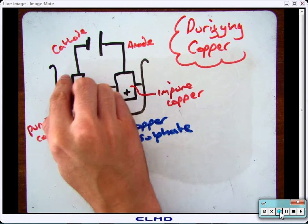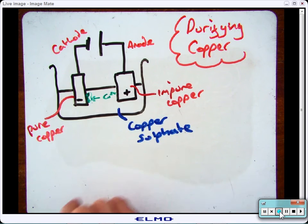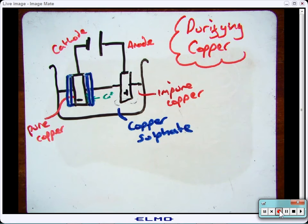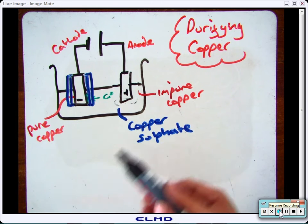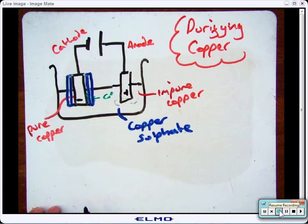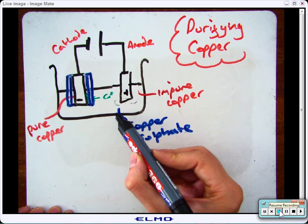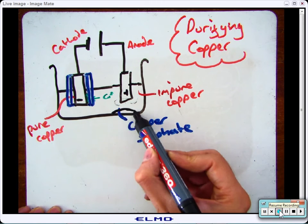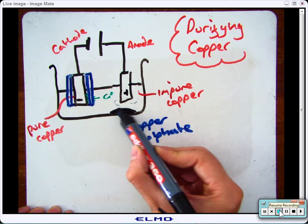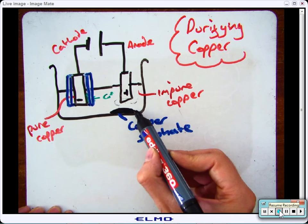So eventually the pure copper electrode will start to build up with pure copper and the impure one will start to disappear. This process will continue until all of the copper has been purified. Now what will happen with the impurities is they will deposit at the bottom of the electrolysis column where they can be removed.